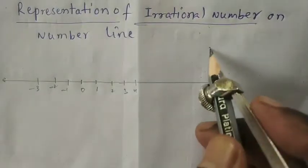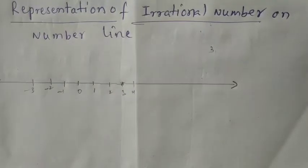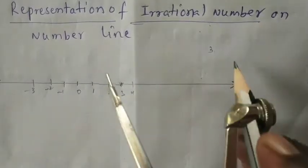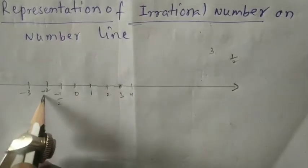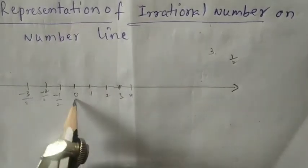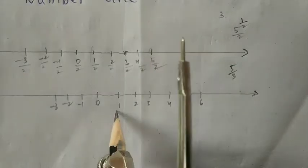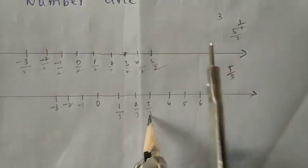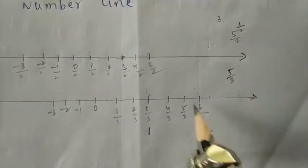For example, locate 3 — that is clear, this is 3. Again, we need to locate 1 by 2. We divide all numbers by 2. If you want π by 3, locate π by 3 on the number line, then divide by 3. So 3 by 3 is 1, 6 by 3 is 2. Now we want 5 by 3 — this is 5 by 3.